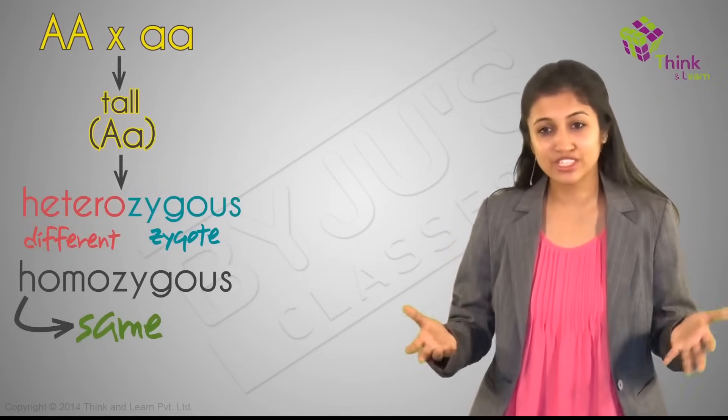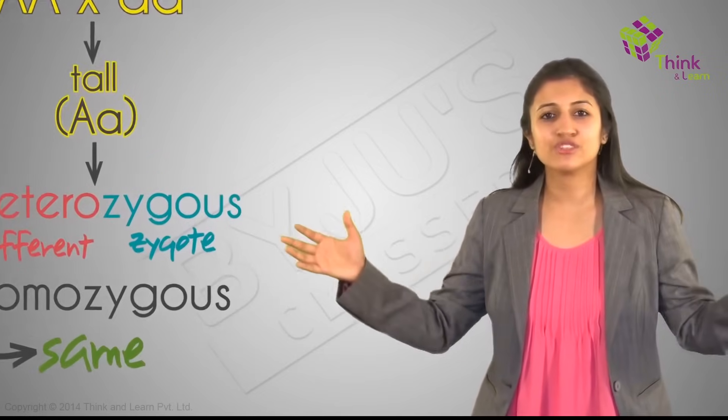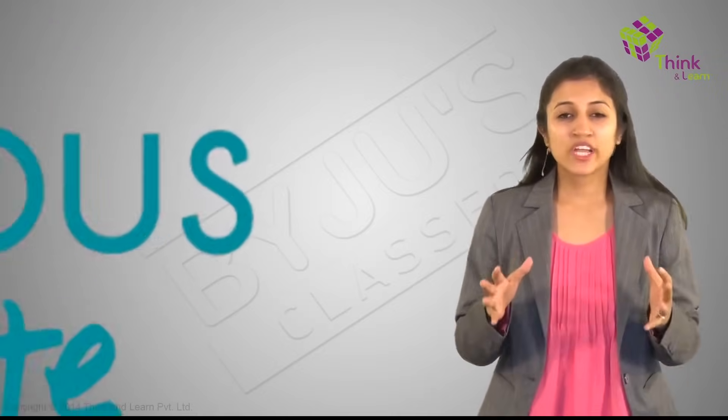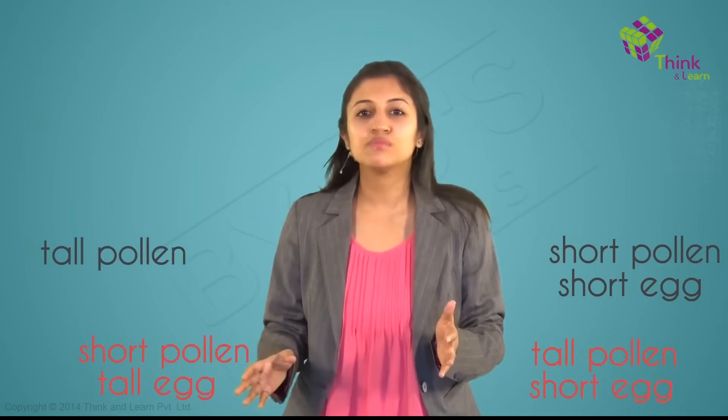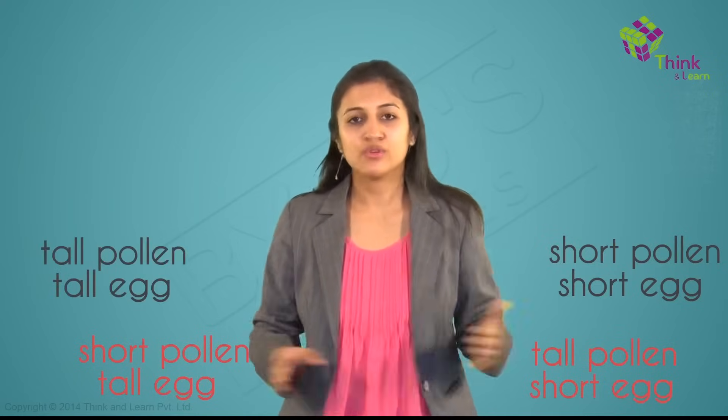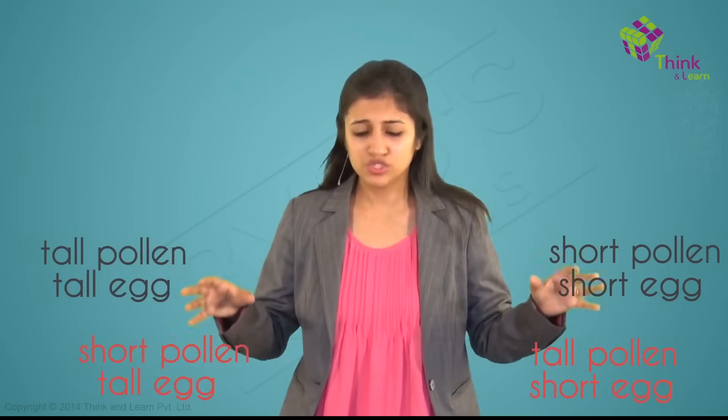Even though the first hybrid experiment gave a tall plant, at the gene level it was Aa. This is called heterozygous — hetero meaning different — and homozygous meaning same. They are just logical names derived from various languages. When the hybrid cell fertilizes, its alleles A and a are sorted out randomly among pollen grains and eggs. Both A and a appear in roughly equal proportion. So the four possibilities are: short pollen with short egg, tall pollen with short egg, short pollen with tall egg, and tall pollen with tall egg. This is too much to write — let's put it in a square.